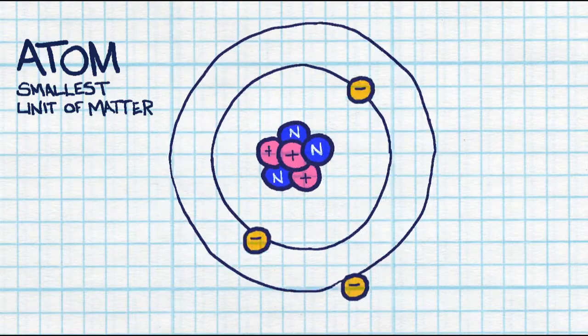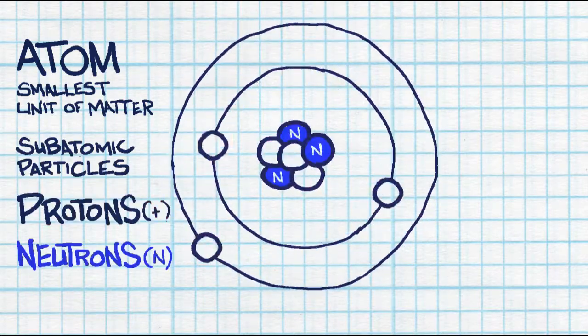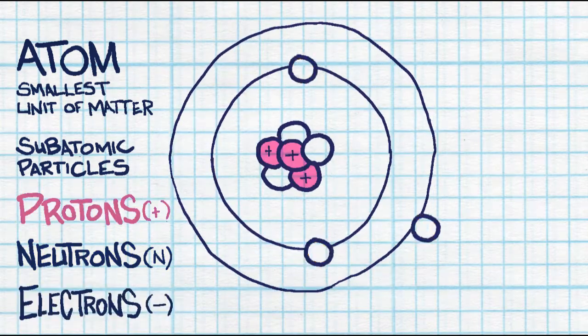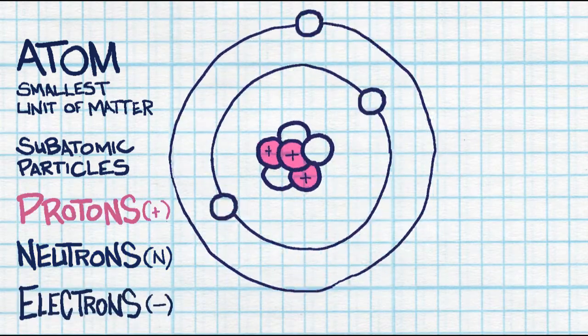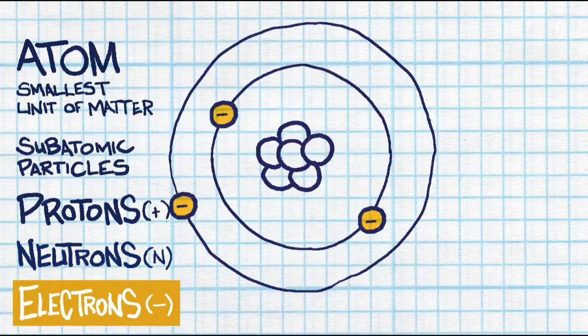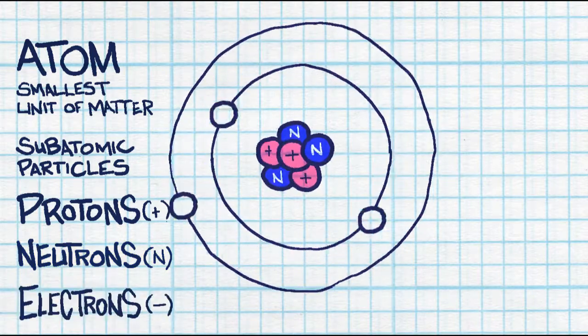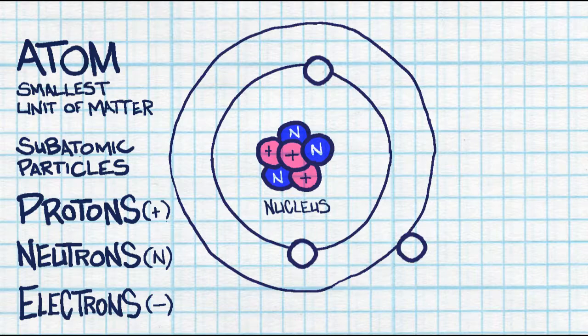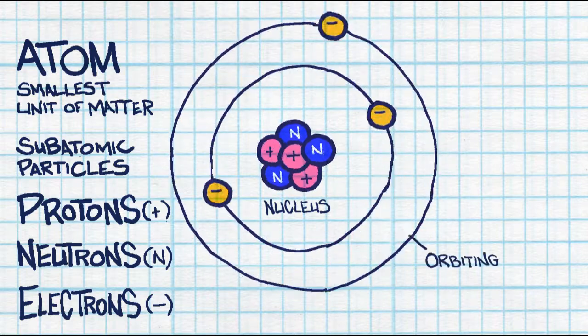These atoms are then made up of other subatomic particles called protons, neutrons, and electrons. Protons have a positive charge, neutrons have a neutral charge, and electrons have a negative charge. The protons and neutrons can both be found inside the nucleus, whereas the electrons are going to be orbiting around.